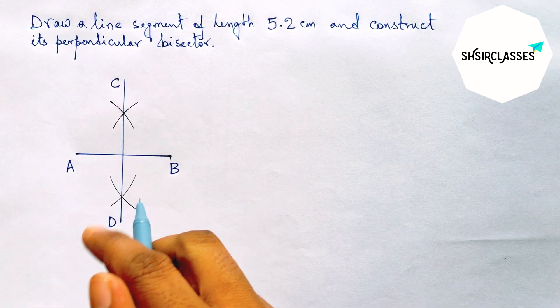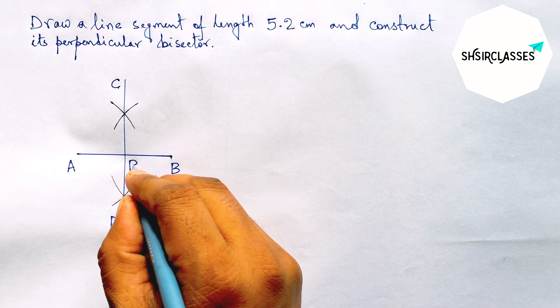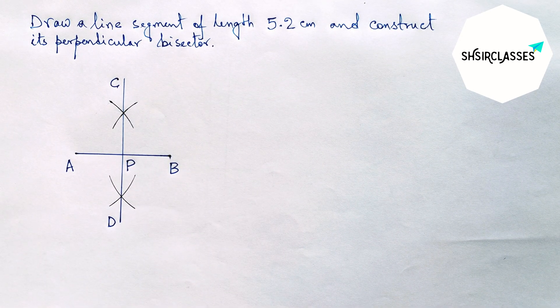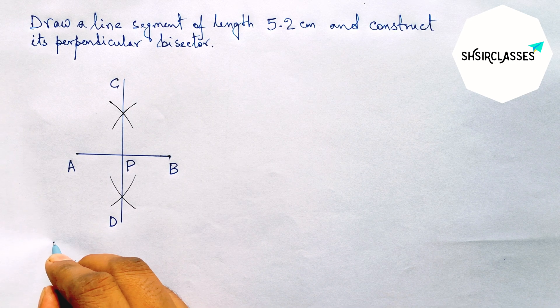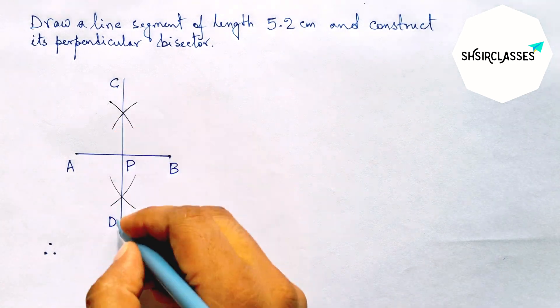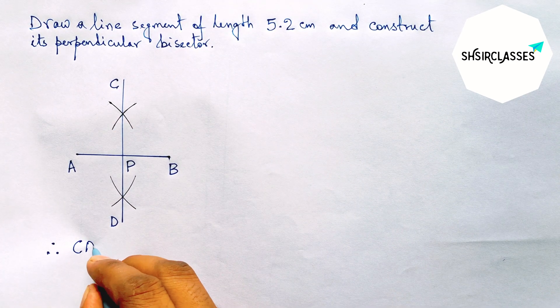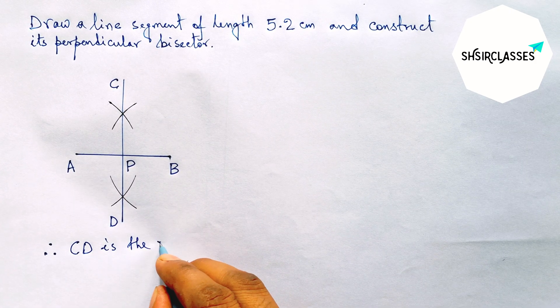Both the lines meet at a point, so taking point P. Therefore, CD is the required perpendicular bisector to the line AB.